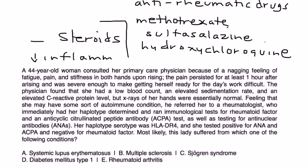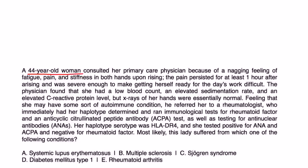So let's take a look at a few vignettes. A 44-year-old woman consults her PCP because of nagging feeling of fatigue, pain, and stiffness in both hands upon rising. The pain persisted for at least one hour after arising and was severe enough to make getting herself ready for the day's work difficult. The physician found that she had low blood count, an elevated sedimentation rate, and an elevated C-reactive protein level. But x-rays of the hands were normal. Feeling that she may have some sort of autoimmune condition, he referred her to a rheumatologist. Her haplotype was HLA-DR4, tested positive for ANA and ACPA, but negative for rheumatoid factor.